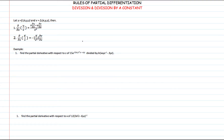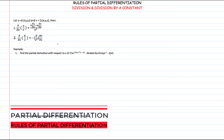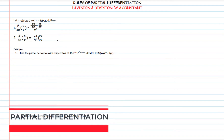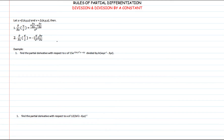Welcome! In this video, we will continue the study of the rules of partial differentiation. We will see the division rule and division by a constant. Imagine that you have two multivariable functions, u and v, which are functions of x, y, and z, and you want to find the partial derivative of their ratio — their division — with respect to some variable.